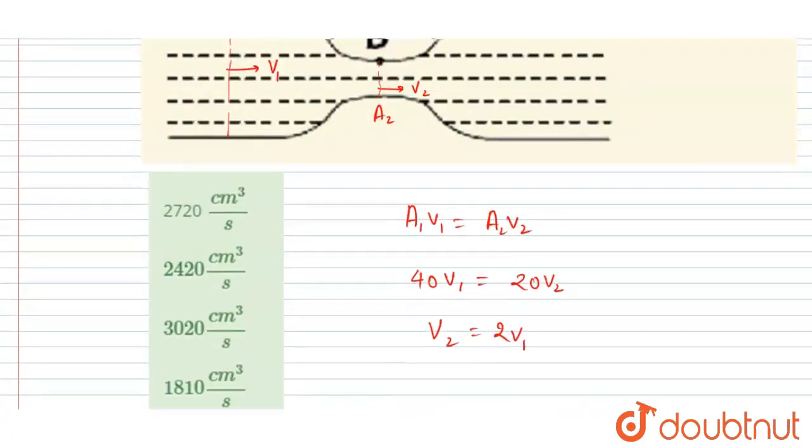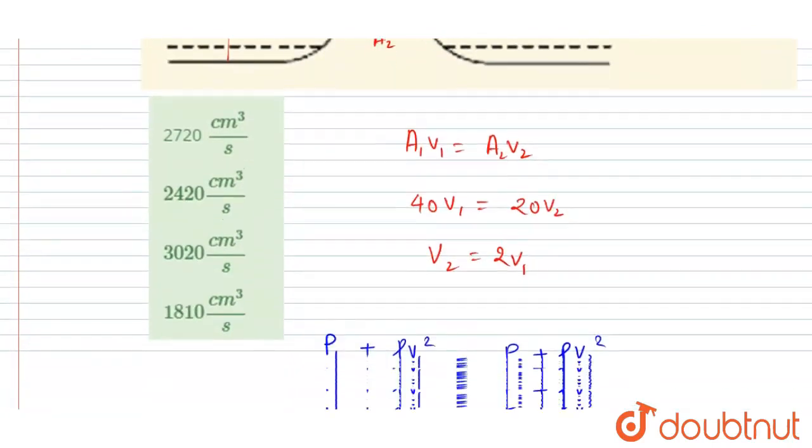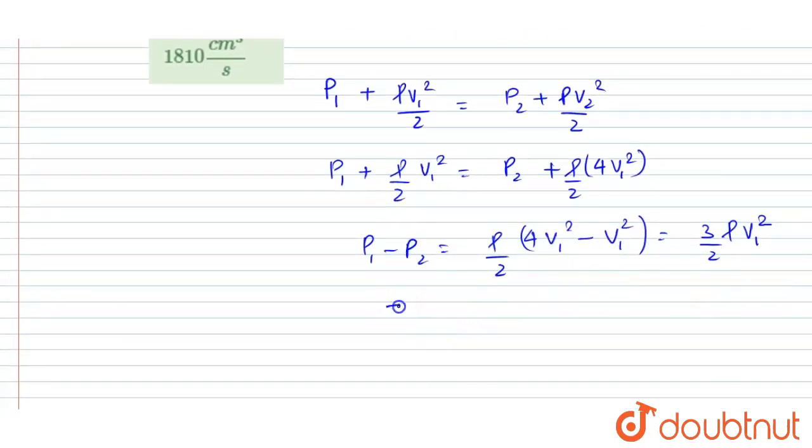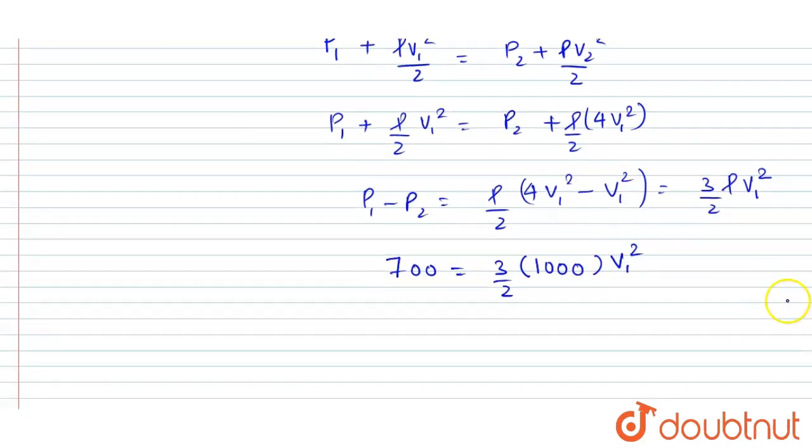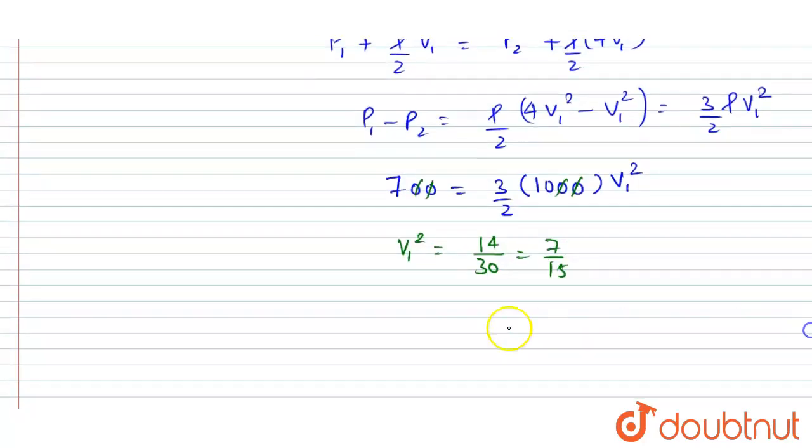P1 minus P2 is already given in the question that is 700. Just put this 700 equals 3 by 2, rho is water of like 1000 and V1 square is to be calculated. Now you can calculate the V1. So I will write V1 square equals, so this will get cancelled out and you will get 40 by 30. That equals 7 by 50. So V1 will be equals to under root of this.